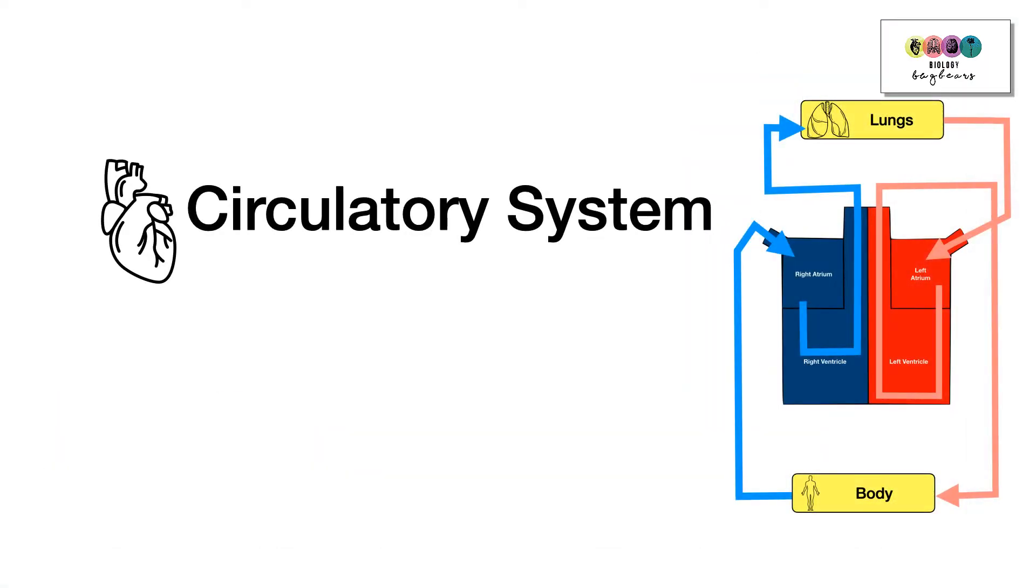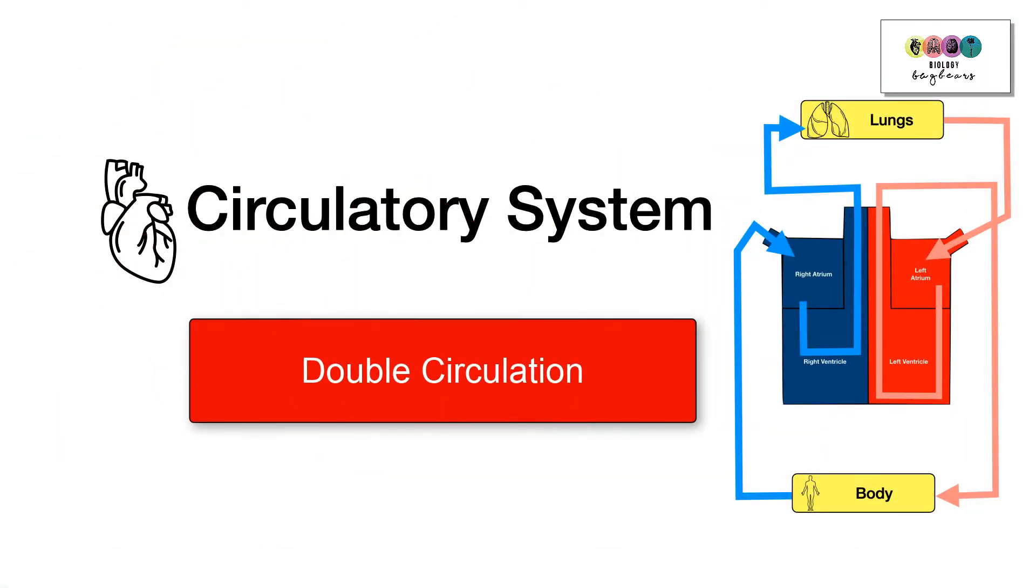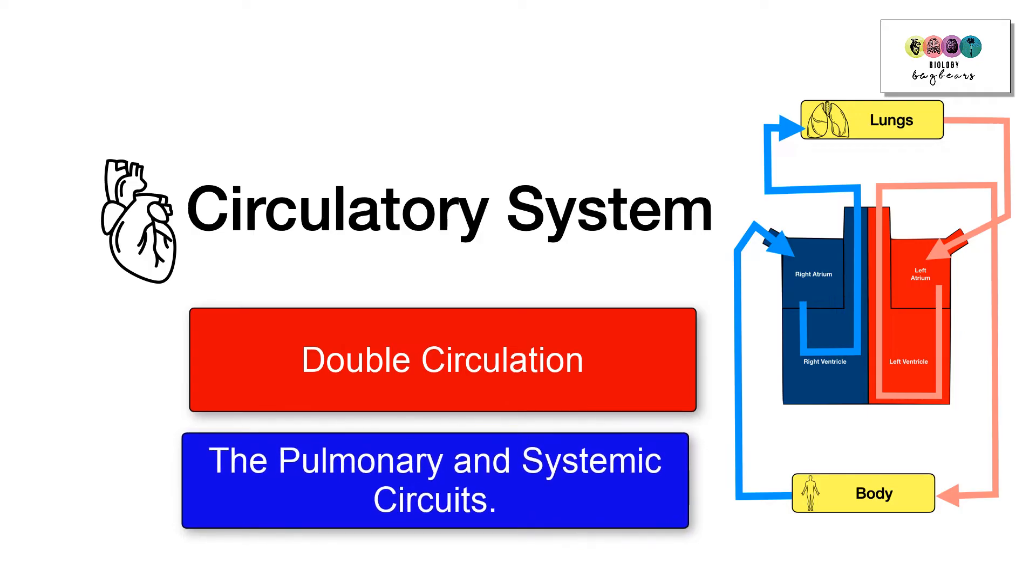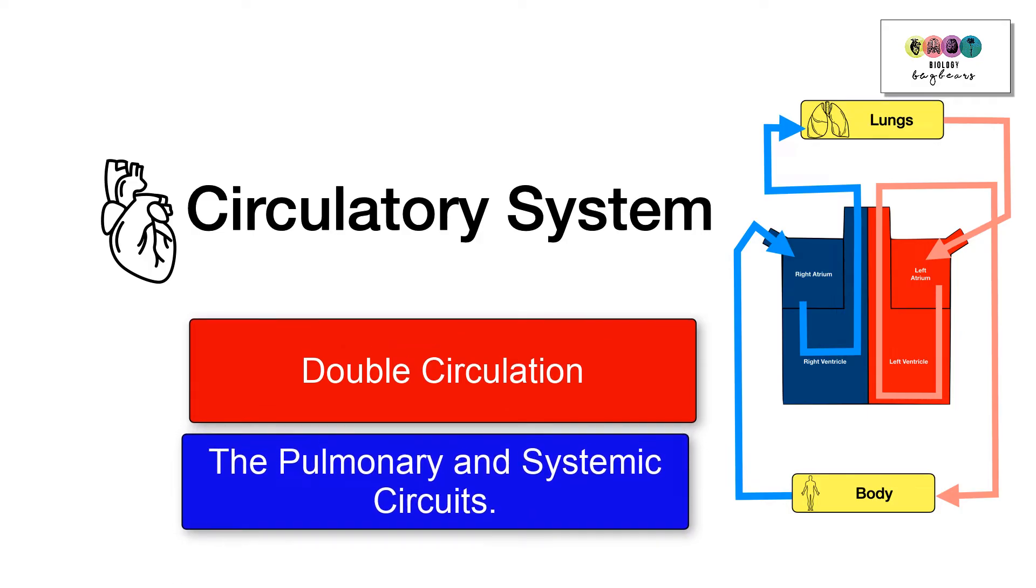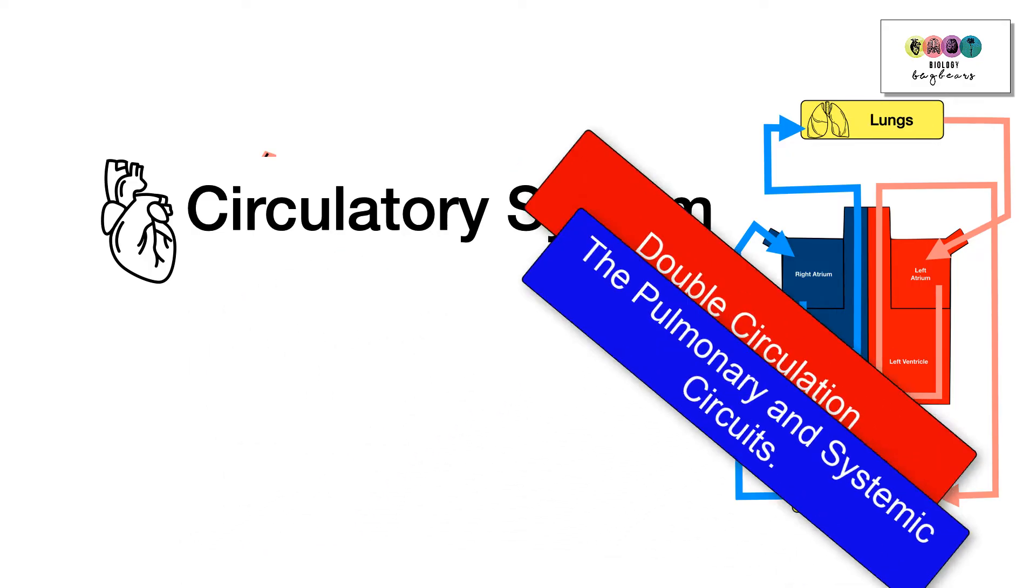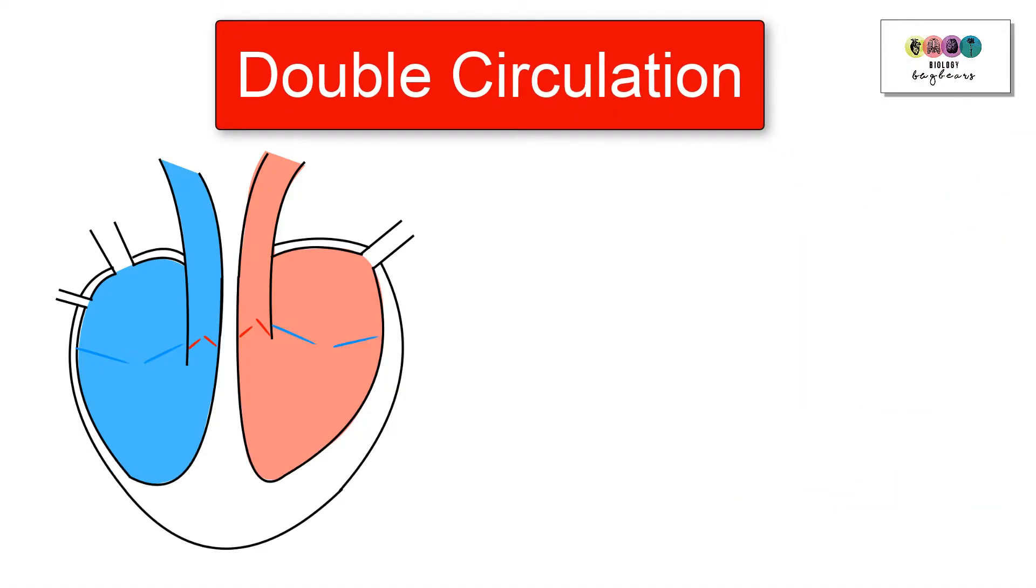This video is part of the circulatory system where we discuss what is meant by double circulation and the systemic and pulmonary circuits, so how blood is pumped around the body, the pathways. So what is meant by double circulation?